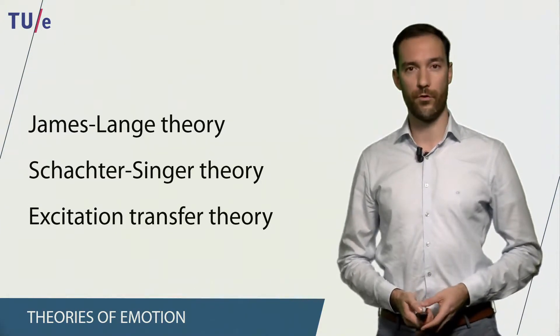Let's take a look at how these theories work. The first one is the James-Lange theory of emotion. This theory states that an emotional stimulus activates some physiological arousal, which in turn leads to us experiencing an emotion.